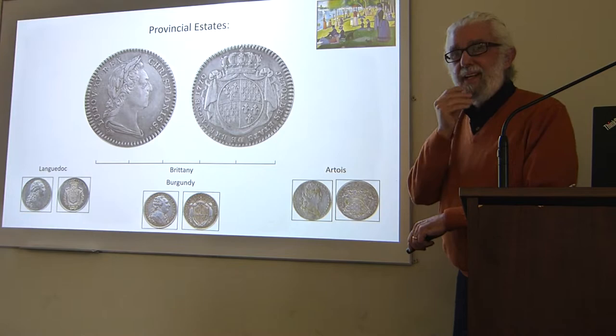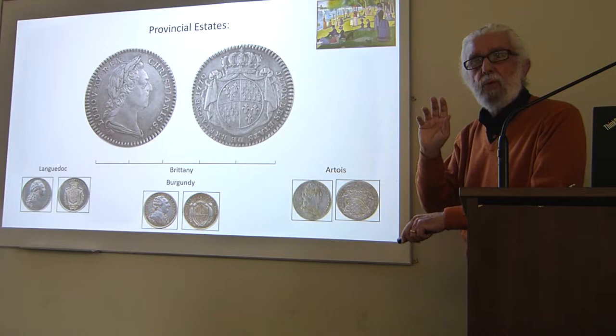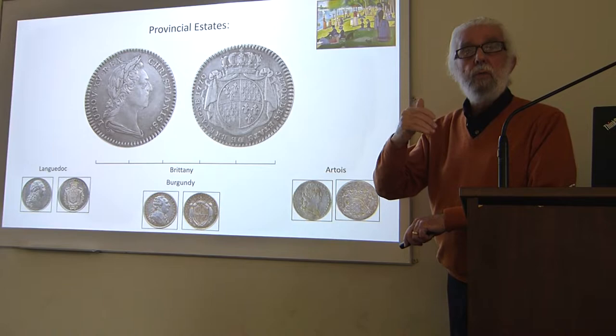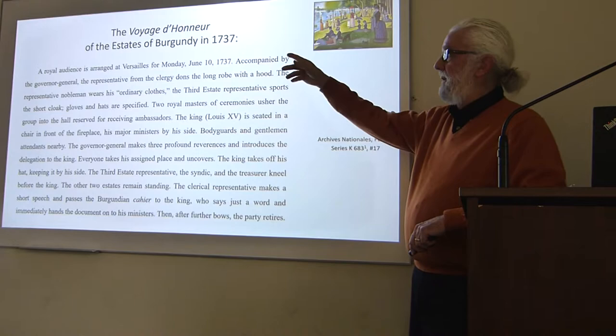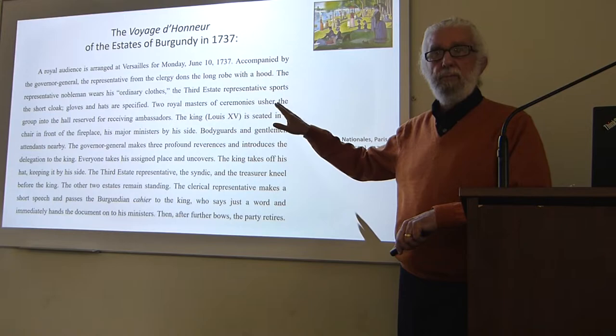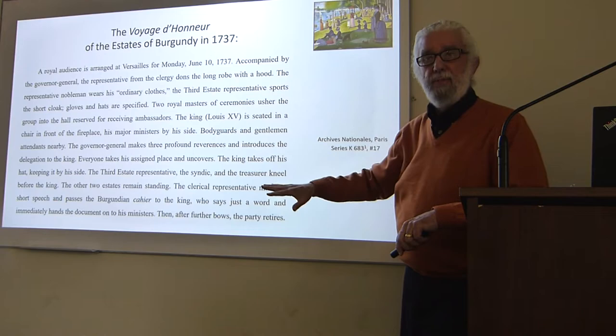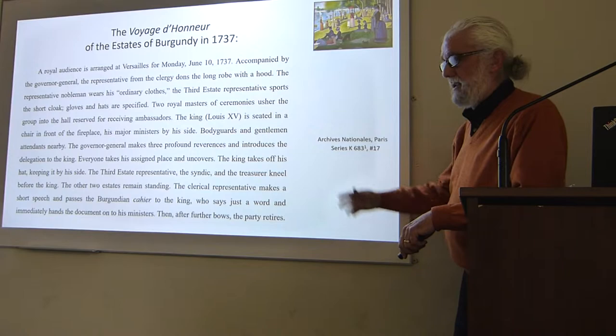Some of these estates had a right every two or three years to present a report to the king — the Cahiers de Doléances. Here's the report of the 'voyage of honor' of the estates of Burgundy in 1737. It takes about nine months to arrange this meeting at Versailles for Monday, June 10th, 1737. The representative of the clergy dons the long robe with a hood; the representative nobleman wears ordinary clothes; the third estate sports a short cloak and hat. Two royal masters of ceremonies usher the group into the hall reserved for receiving ambassadors.